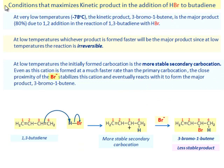Conditions that maximize kinetic product in the addition of HBr to 1,3-butadiene. At very low temperatures, the kinetic product 3-bromo-1-butene is the major product due to 1,2-addition in the reaction of 1,3-butadiene with HBr. At low temperatures, whichever product is formed faster will be the major product since at low temperature the reaction is irreversible.